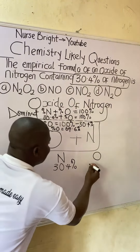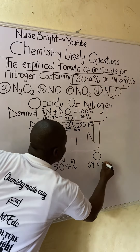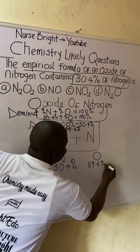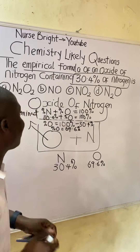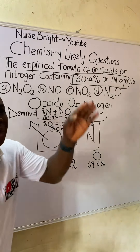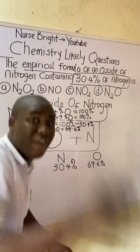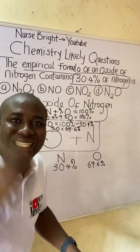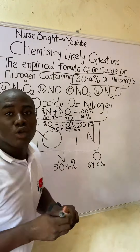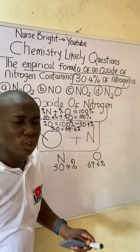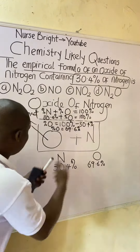100 percent minus 30.4 percent gives us 69.6 percent. So the percentage of oxygen is 69.6 percent. The first step in solving for empirical formula is to divide by the atomic masses of the elements.